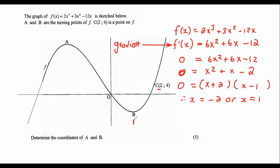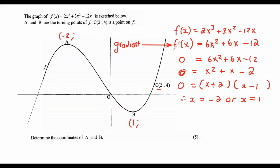Therefore x must be negative two or x must equal one. So this x value is 1 and this x value is negative 2. Now we need the y values. A lot of students plug back into the derivative equation, but then you'll just keep getting a y value of zero. That's not what you want. Remember, you're looking for the y value, so you must come back to the original equation and plug in there.